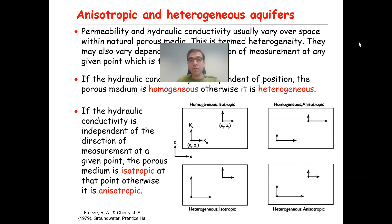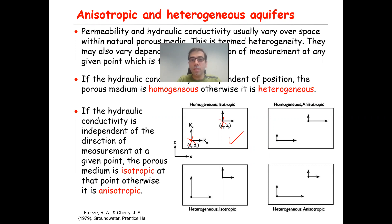This figure actually explains this concept very nicely. The first case is a case of homogeneous isotropic aquifer or porous medium. Why is that? Because independent of the location — whether you measure here or here — you're getting the same value of the permeability, so that tells us this medium is homogeneous. And also, independent of the direction, Kx and Kz have the same magnitude, so the permeability is not a function of the direction of measurement. Therefore, it is an isotropic system.